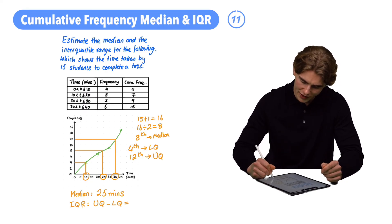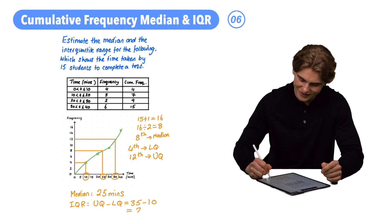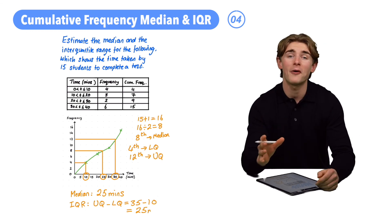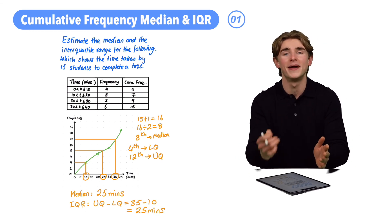So we can do our upper quartile of 35 subtract our lower quartile of 10. 35 take 10, that's going to give us 25. So we now have our interquartile range of 25 minutes.